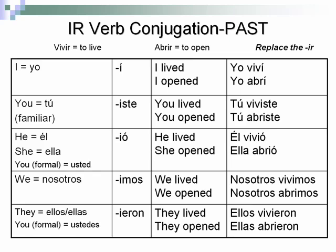This is how you conjugate normal IR verbs in the past tense. We're going to work with vivir (to live) and abrir (to open). You replace the IR and add the appropriate ending. 'I lived' would be yo viví. 'You opened' would be tú abriste. 'He lived' would be él vivió. 'We opened' would be nosotros abrimos. And 'they lived' would be ellos vivieron.